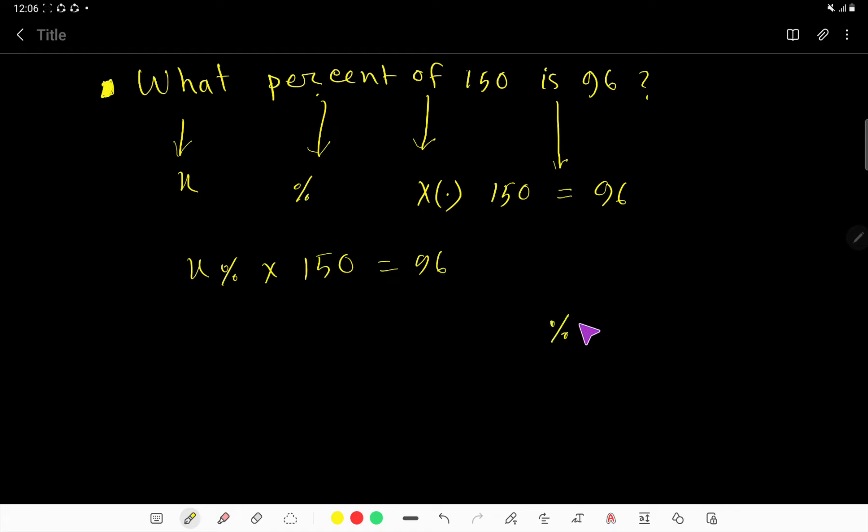Remember, percent means 1 over 100, right? So we can write x times 1 over 100 times 150 equals 96. So x divided by 100 times 150 equals 96.